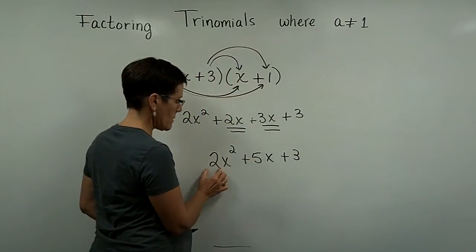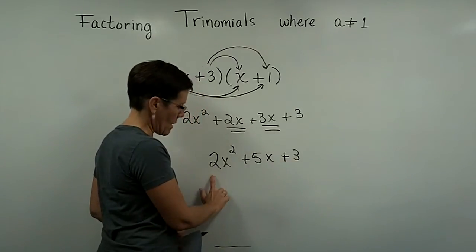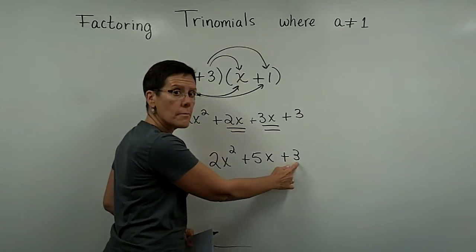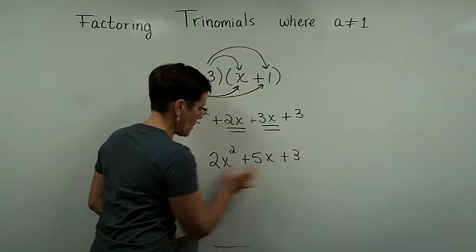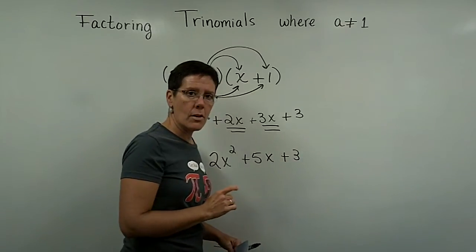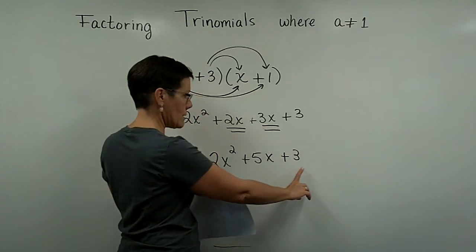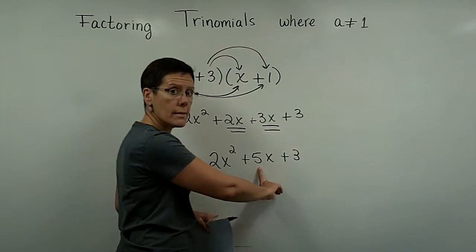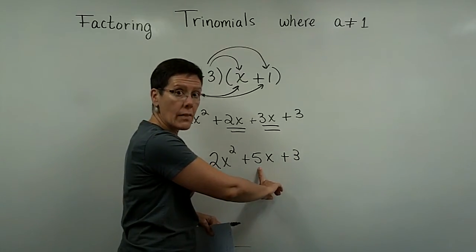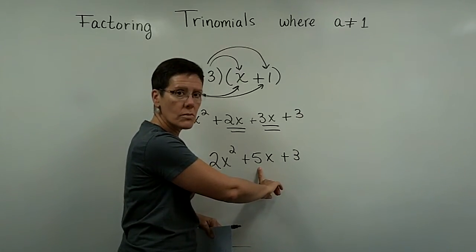The AC method takes this number and this number. This is A, this is B, this is C. It takes those two values, multiplies them together and you look for two numbers whose product is 6 and adds to be 5. And that will work if the trinomial is factorable.